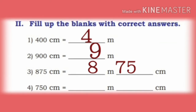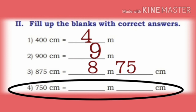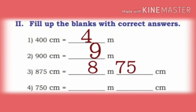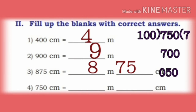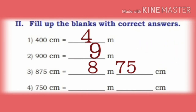Now, fourth one: 750 centimeter is equal to dash meter dash centimeter. We divide 750 by 100. 100 sevens are 700, so quotient is 7 and remainder is 50. So, answer is 7 meter 50 centimeter.